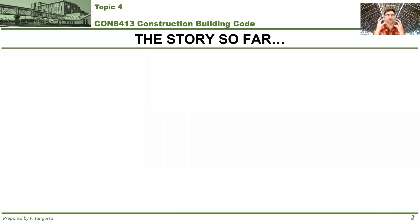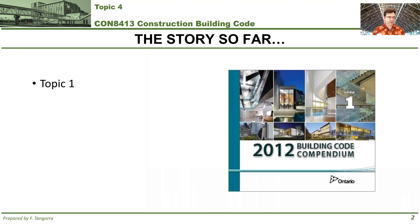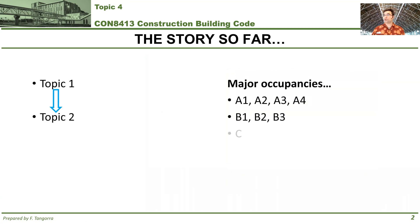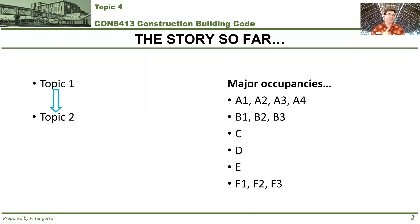I want to bring us to where we are so far with the story. We started off with topic 1, where you were introduced to what the building code is, how it's arranged, and how you read and reference its contents - you don't do it by page numbers, remember that. Then we moved on to topic 2, where you were introduced to the concept of major occupancies, and you were shown how to do it like a pro using Appendix A, not just the table in Division B, Part 3.